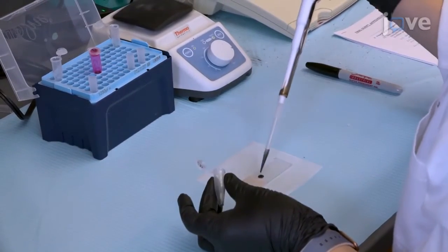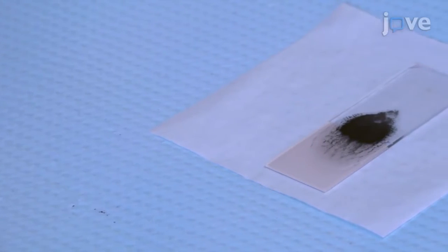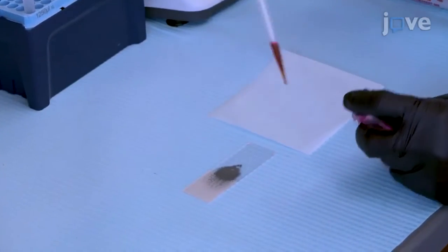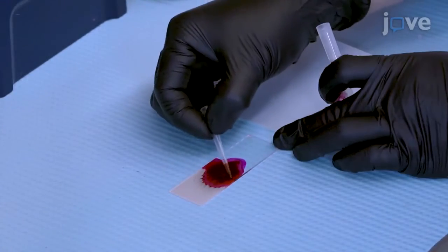Pipette 250 microliters of the tungsten bead suspension onto a glass slide. Wait for the suspension to air dry and add 300 microliters of the dye solution.